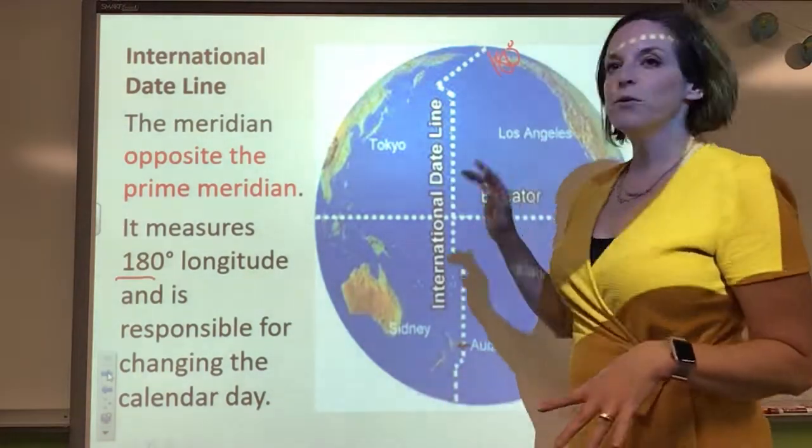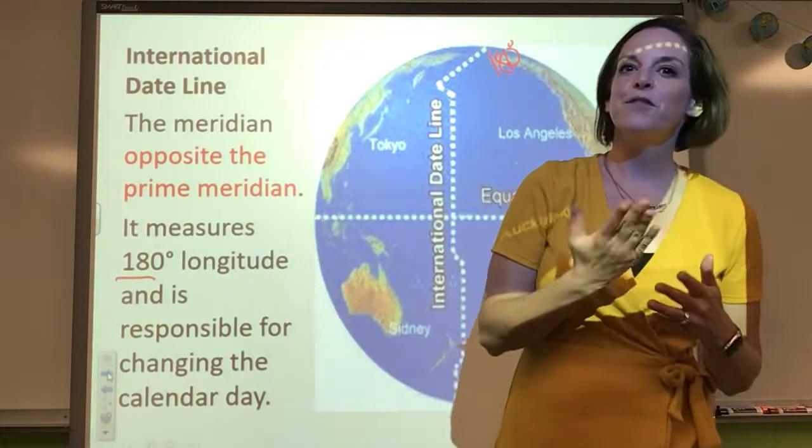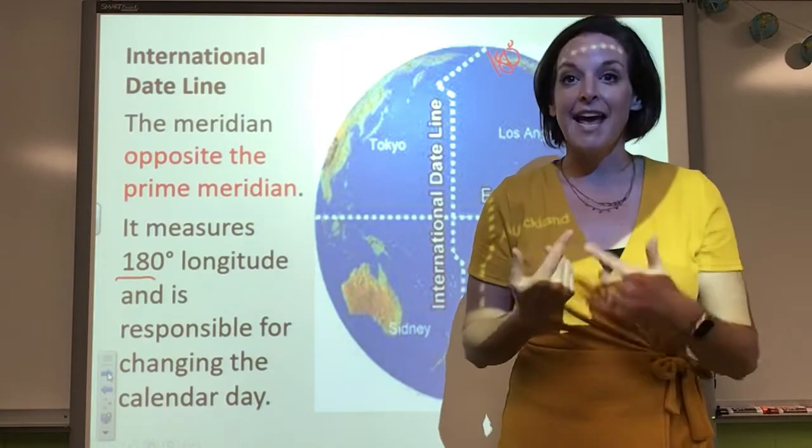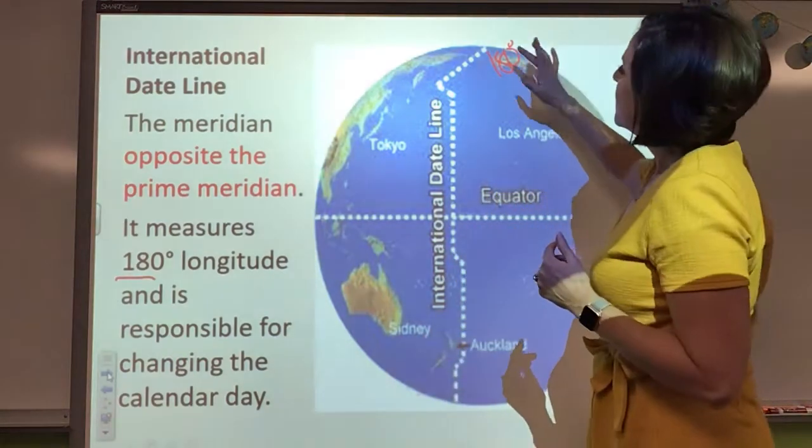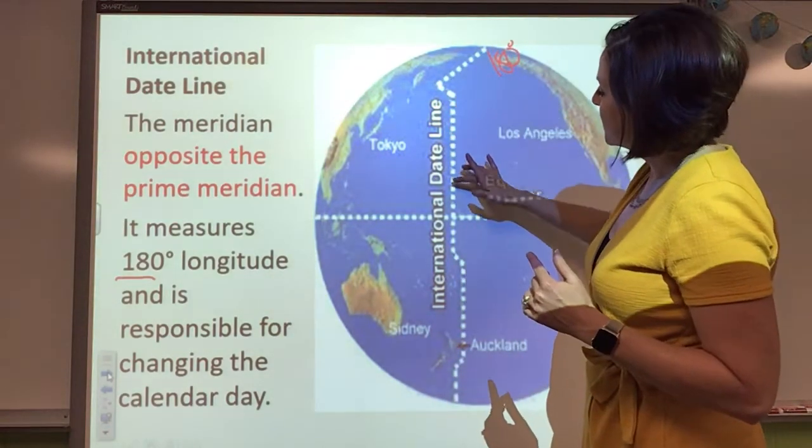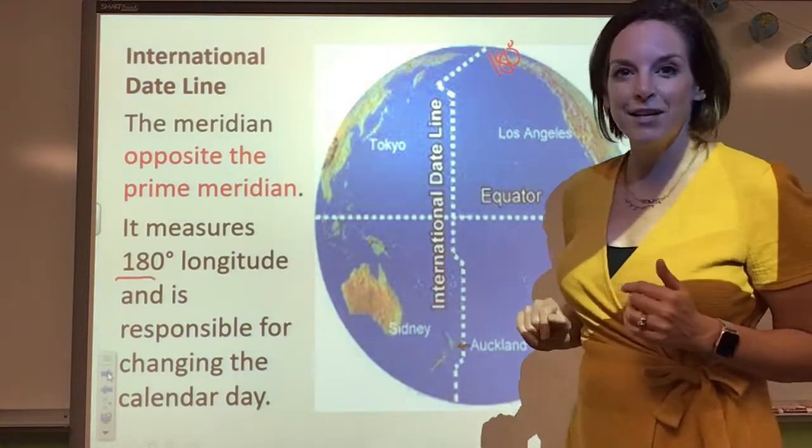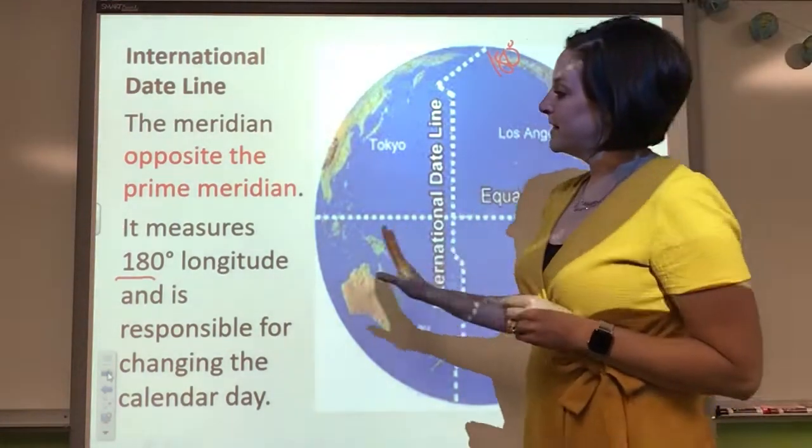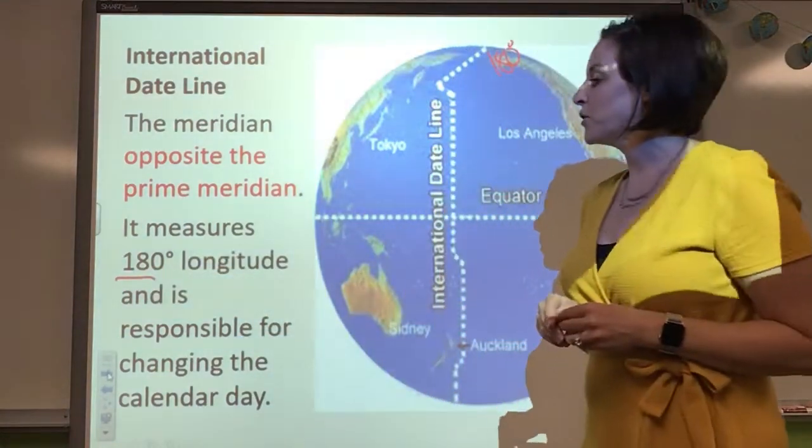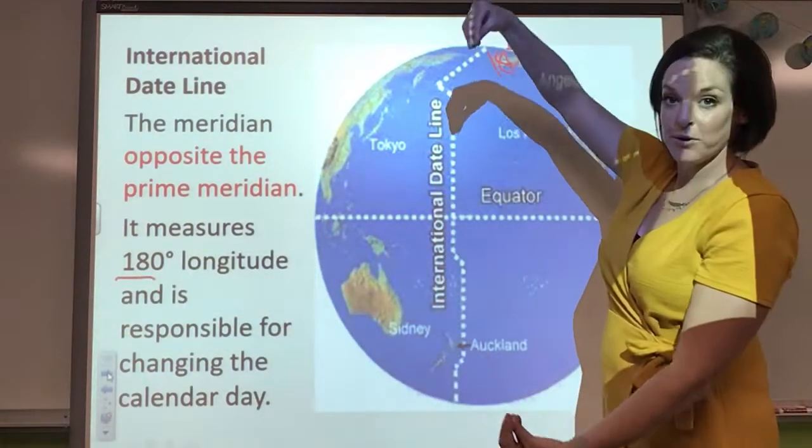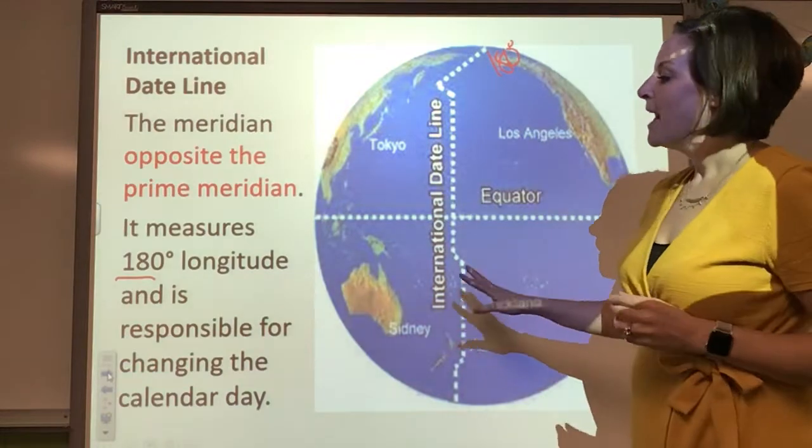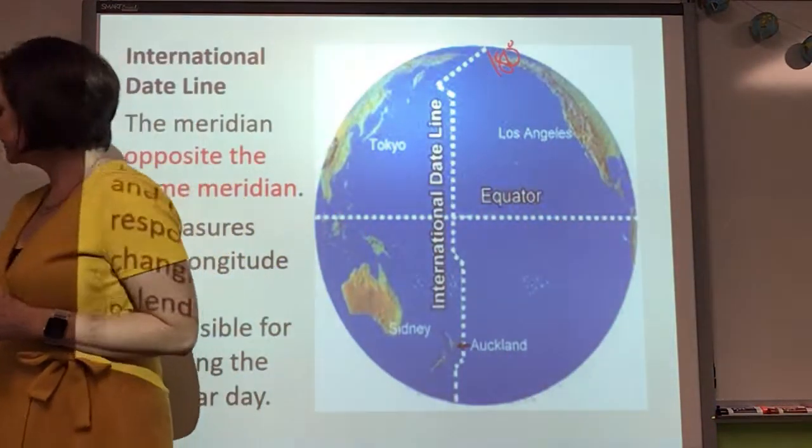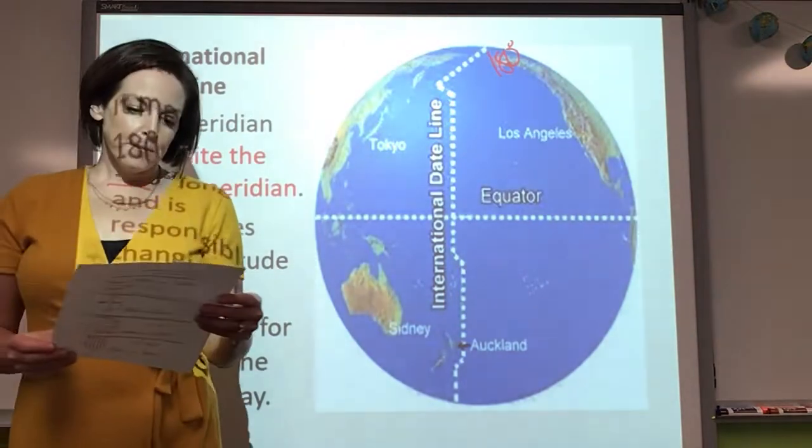So this international dateline is in the ocean. I don't know if any of you have traveled and you've flown over it. They'll tell you that they're flying over the international dateline, and that's when the calendar changes. So, again, it's crooked, so it does not go through any land. And, again, this is 180 degrees longitude, because it's the longer one. And, again, it is responsible for changing the calendar date.